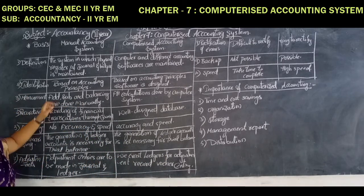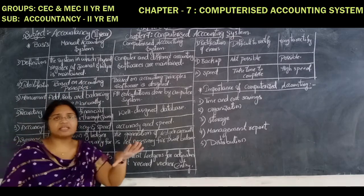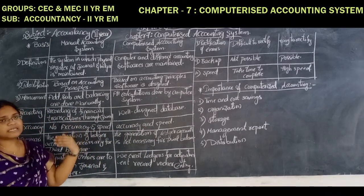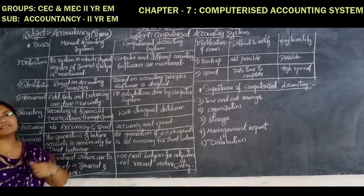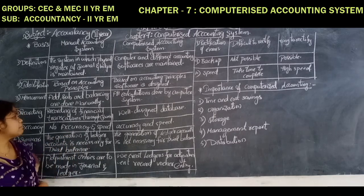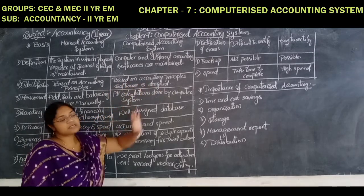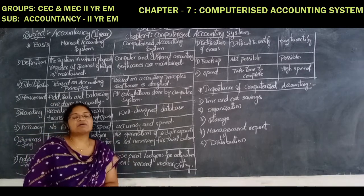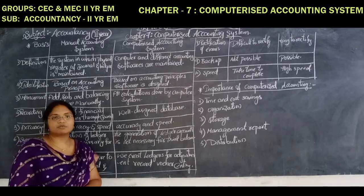Identification: based on accounting principles, we find the transactions which come under which accounts. If they come under the real account, we give some accounting treatment. If they come under the personal account, we give some other type of accounting treatment. If they come under the nominal account, then we give some other treatment. In computerized accounting, based on the accounting principles, the software is designed. The accounting software package is prepared based on accounting principles and in that way the accounts will be done.